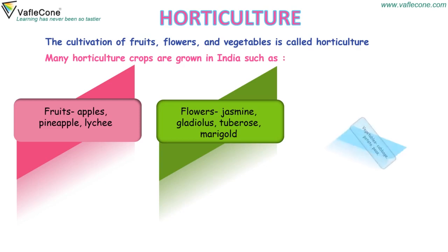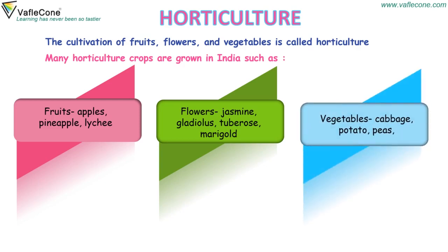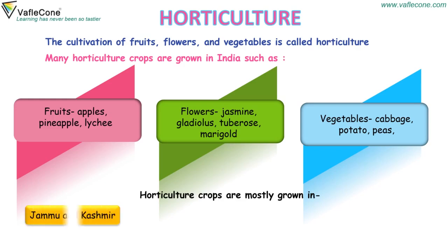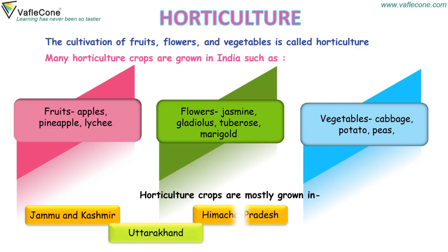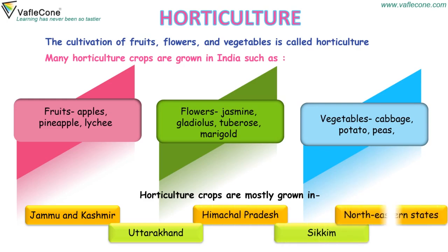Vegetables such as cabbage, potatoes and peas. Horticulture crops are mostly grown in Jammu and Kashmir, Uttarakhand, Himachal Pradesh, Sikkim and the north-eastern states.